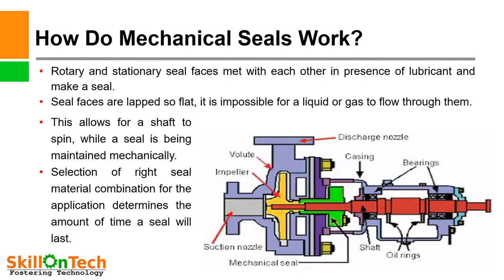How do mechanical seals work? A picture of a pump is given in the slide. Rotary and stationary seal faces mate with each other in the presence of a lubricant and make a seal. A lubricant may be a process fluid or an auxiliary sealant. Seal faces are lapped so flat within three light bands that it is impossible for a liquid or gas to flow through them. This allows the shaft to spin while a seal is being maintained mechanically. In a pump, the shaft is in a rotating condition, and the rotary unit of the mechanical seal also rotates along with the shaft, while the stationary seal ring is fixed in the casing.